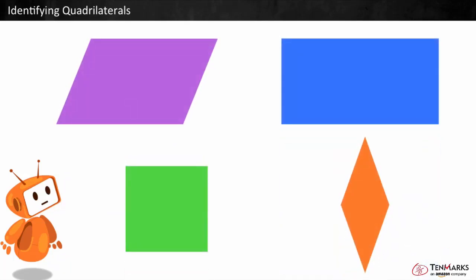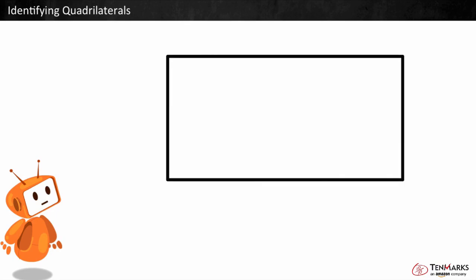Let's take a look at quadrilaterals. One way to help identify quadrilaterals is to look at the angles.